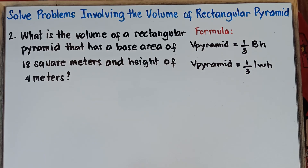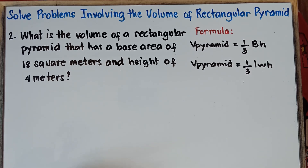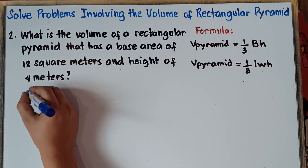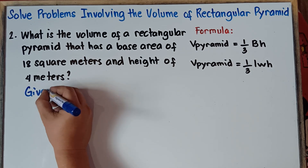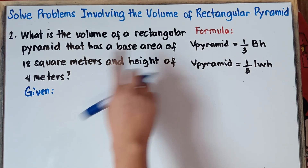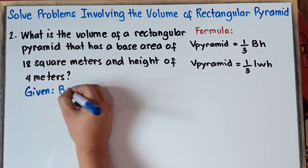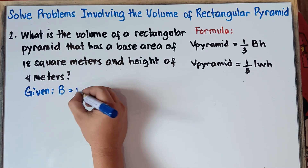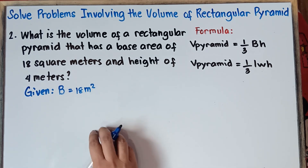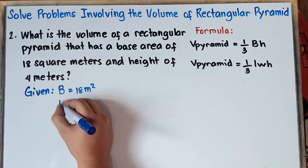Example 2: What is the volume of a rectangular pyramid that has a base area of 18 square meters and a height of 4 meters? We write down the given: base area equals 18 square meters, and height equals 4 meters.